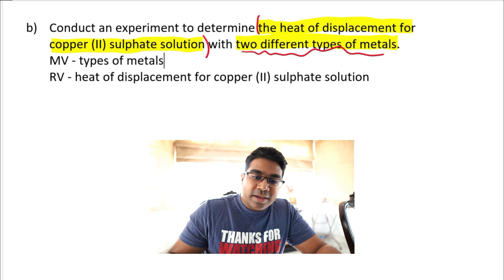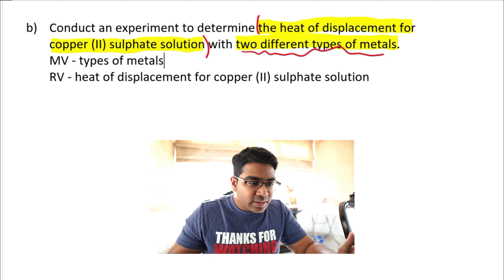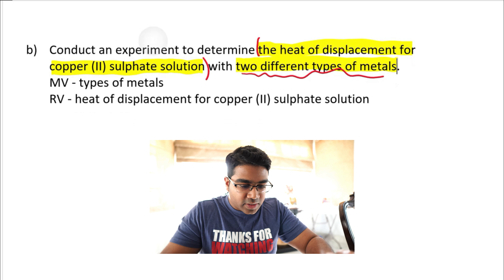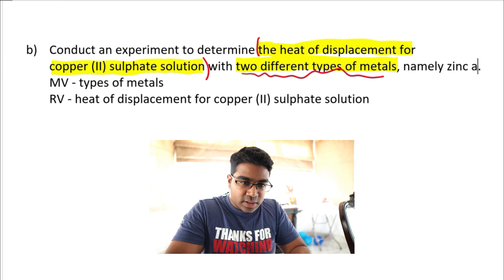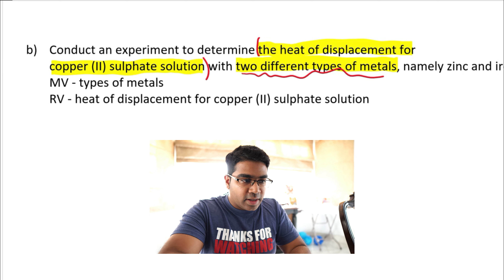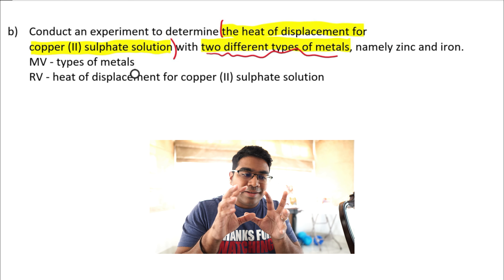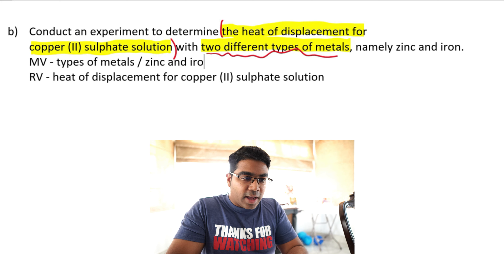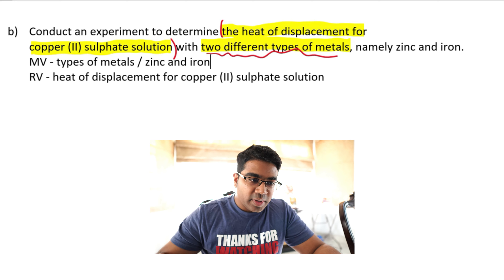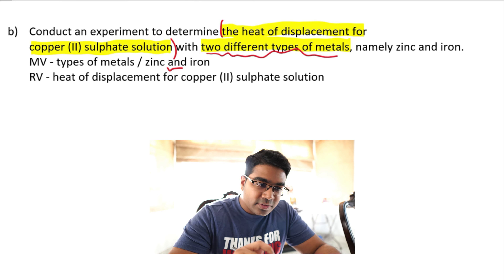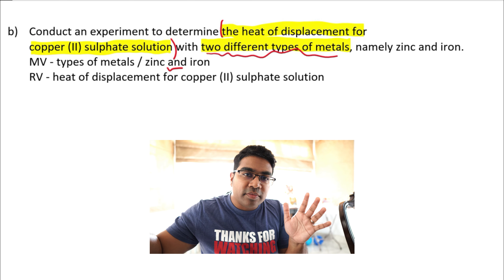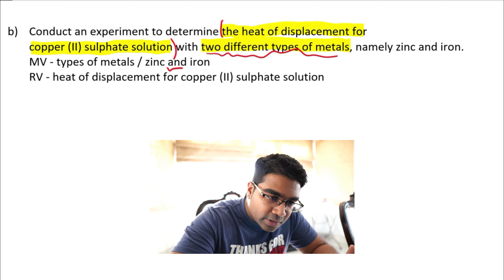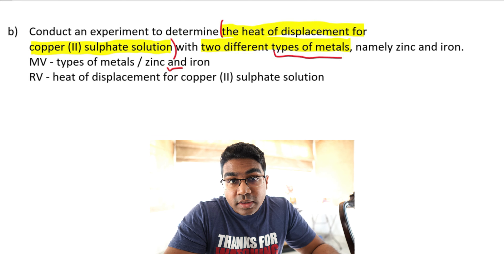Just a note: if you are not sure what the title should be and the question gives you the names of the metals — for example zinc and iron — you could also answer 'zinc and iron.' However, do not write 'zinc or iron' — that is wrong. It should be 'zinc and iron.' But if the question has already given you 'types of metals,' then it is easier to just use 'types of metals.'